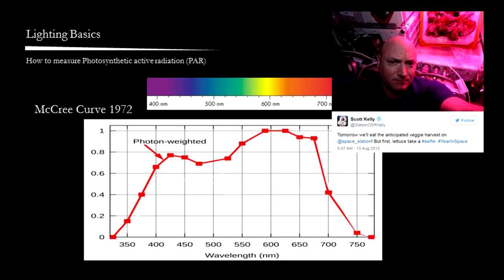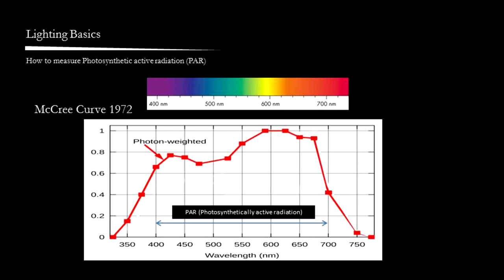Since photosynthesis drops off rapidly below 400 nanometers and above 700 nanometers, we describe the region between 400 and 700 nanometers as PAR or photosynthetically active radiation. This is also the range that PAR meters traditionally measure. I will talk more on how to measure this with regards to light fixtures later.